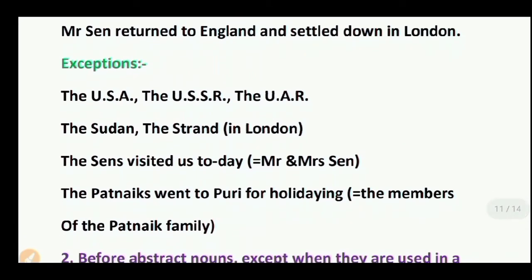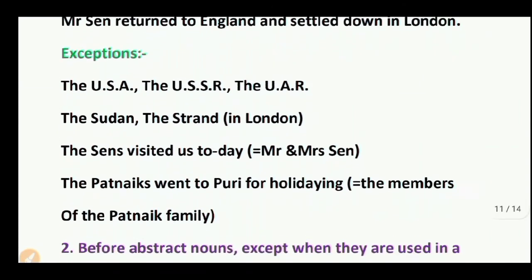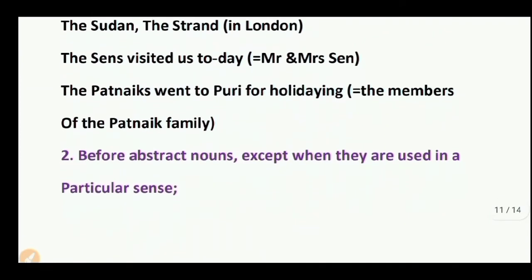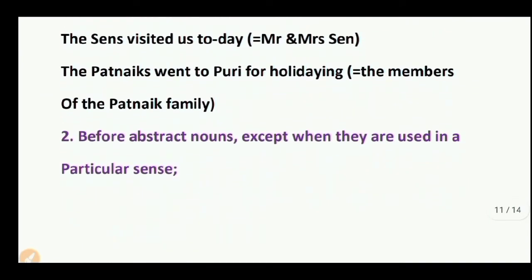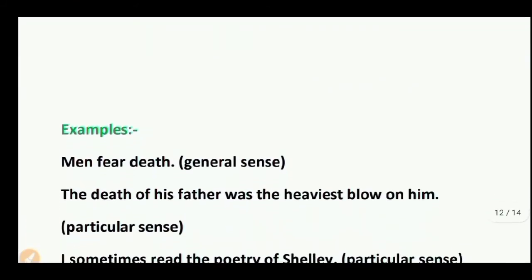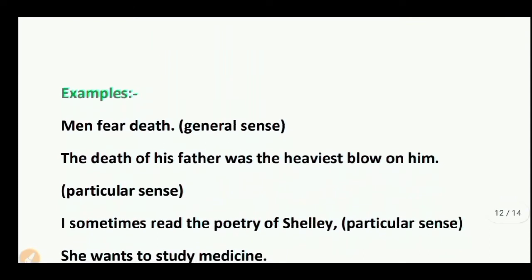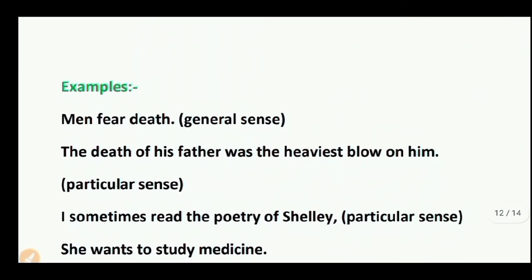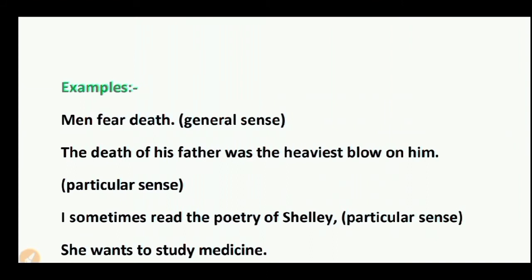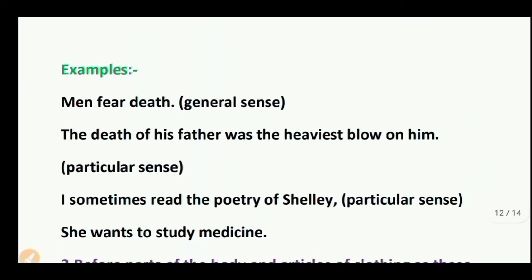The Patnaiks went to Puri for holidays — 'the Patnaiks' refers to the members of the Patnaik family. Second omission rule: before abstract nouns except when used in a particular sense. Example: Men fear death — general sense. The death of his father was the heaviest blow on him — particular sense, so 'the death' is used. I sometimes read the poetry of Shelley — particular sense. She wants to study medicine — general sense, no article.